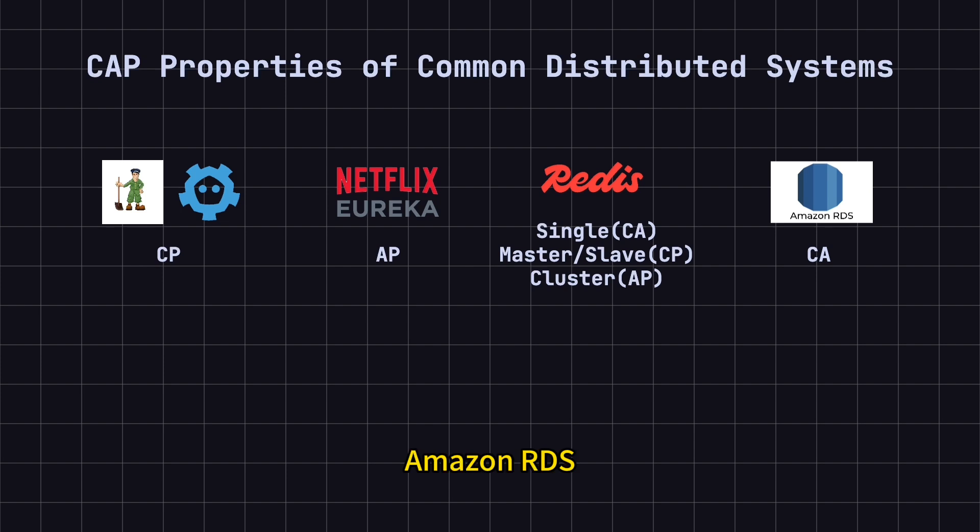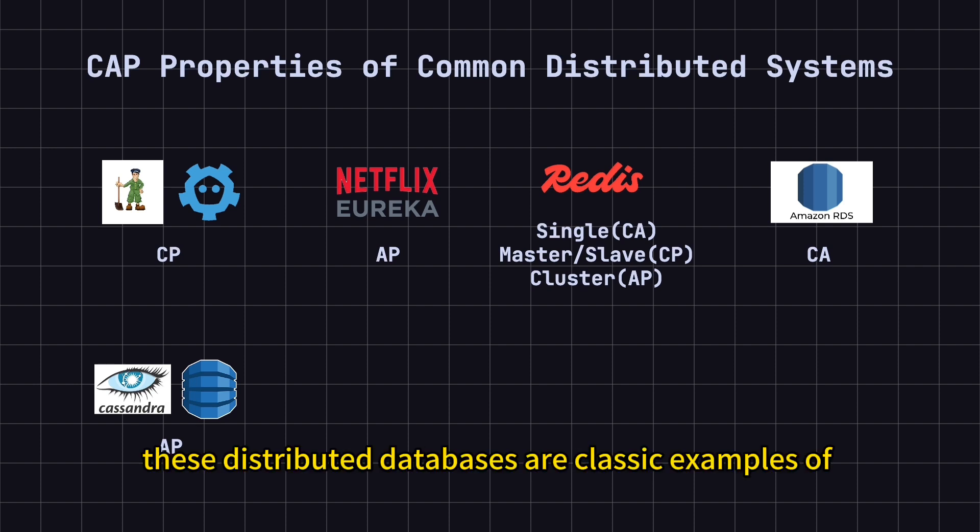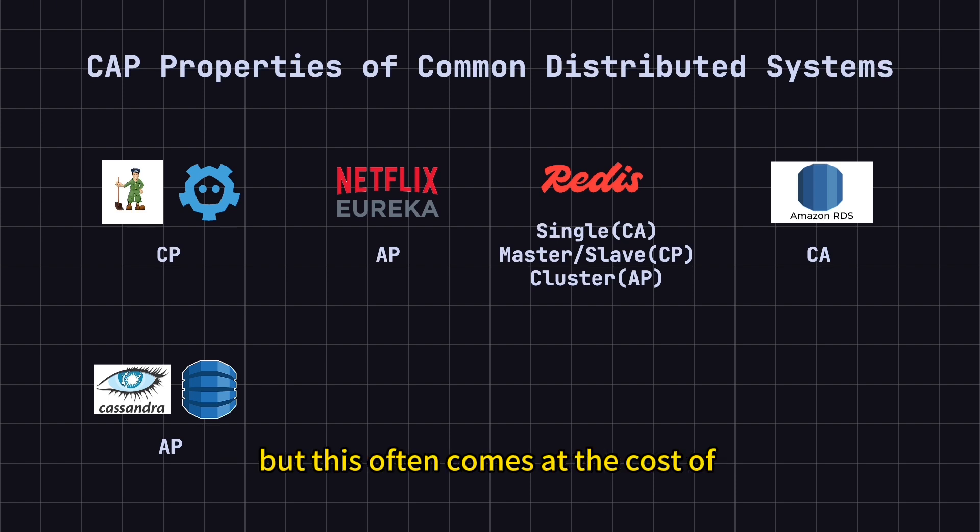Fourth, Amazon RDS. Amazon RDS in single-node or multi-AZ deployments is typically seen as a CA system. It prioritizes consistency and availability, but in case of a network partition, RDS might sacrifice some availability to maintain consistency. Fifth, Cassandra and DynamoDB. These distributed databases are classic examples of AP systems, prioritizing availability and partition tolerance. Users can configure the consistency level to adjust the system's strictness, but this often comes at the cost of availability or performance.